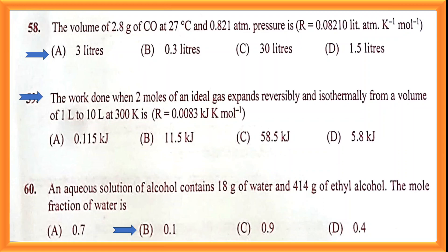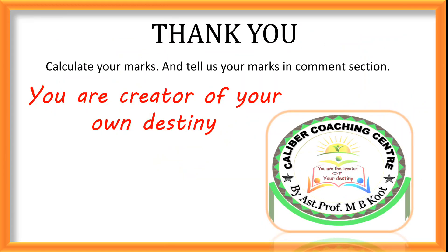Question number sixty: the answer is option B — 0.1 is the correct answer. I hope you followed along. This covers all 60 questions asked in KCET 2022 chemistry. I hope you all did well. Please comment your marks below. Calculate your marks and remember — you are the creator of your own destiny. Thanks for watching!